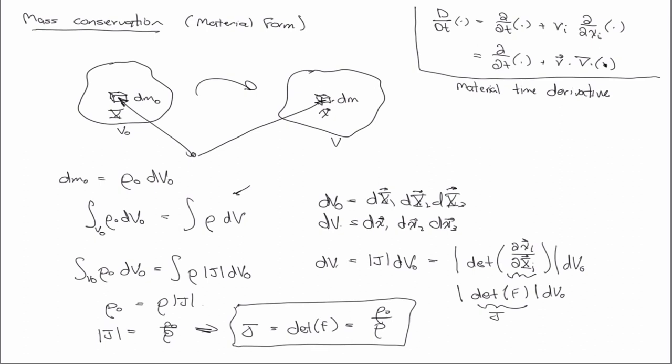So you can just say j, which is equal to the determinant of f, is equal to ρO over ρ. And so this is a statement of mass conservation. Otherwise, you might hear it called a continuity equation. And sometimes we talk about incompressible materials.